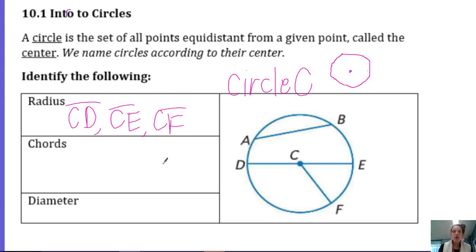A chord is a segment whose endpoints lie on the edge of the circle. So segment AB is an example of a chord. So a chord is a segment, it has a definite start and a definite stop. So AB is a chord, as well as segment DE. DE is a chord because its two endpoints are on the circle.